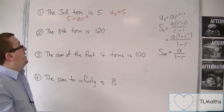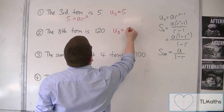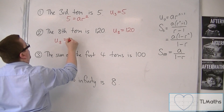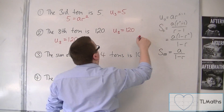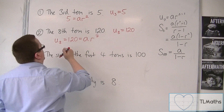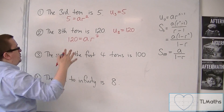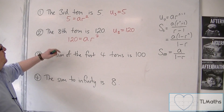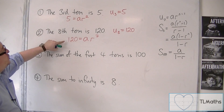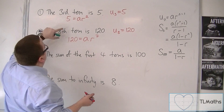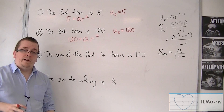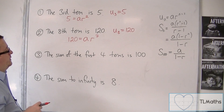So if the 8th term is 120, then u8 is 120. In a similar way, using the nth term formula, that is a times r to the n minus 1, so that's r to the 7. So 120 equals ar to the 7. If this was a question where I'm given these two bits of information, I could theoretically work out a and r using those two equations. I'm going to show you how to do that in the next video.